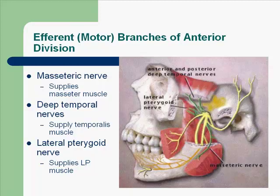The efferent or motor branches of the anterior division of the mandibular division of the trigeminal nerve include the masseteric nerve, which supplies the masseter muscle. The deep temporal nerves supply the temporalis muscle. These are motor nerves, and the lateral pterygoid nerve supplies the lateral pterygoid muscle.